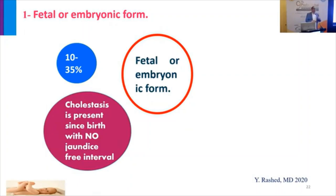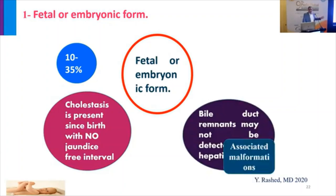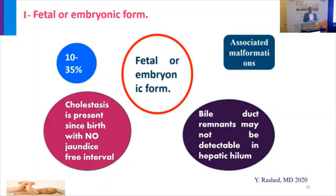Cholestasis presents since birth in the fetal type. Please, doctors following bilirubin in the unit — request at least one direct bilirubin measurement; not all patients will have indirect hyperbilirubinemia. The bile duct remnant may be absent in such patients. Associated malformations are present with the congenital embryonic type, but not with the postnatal form.